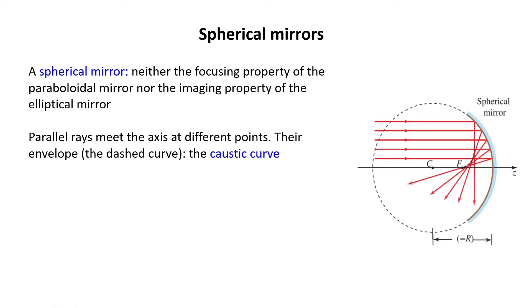You see an envelope for the rays shown by a dashed curve in this figure. We call the curve caustic curve.